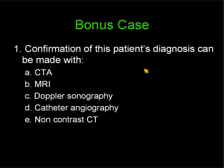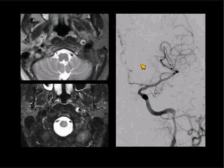Confirmation of this patient's diagnosis can be made with: A, a CTA — and I mean definite confirmation; B, an MRI; C, Doppler sonography; D, a catheter angiogram; or E, a non-contrast CT. The correct answer is MRI. In order to visualize the clot within the vessel wall, you need an MRI.